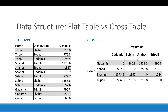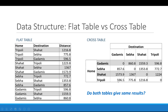Here is an example of flat table versus cross table. The flat table on the left shows city names with home, destination, and distance between cities. The cross table shows a similar structure. Let's test whether both tables give the same results — for example, going from Tripoli to Ghadames gives 596.5, and in the cross table from Tripoli to Ghadames we get the same distance. So yes, both tables give the same information.